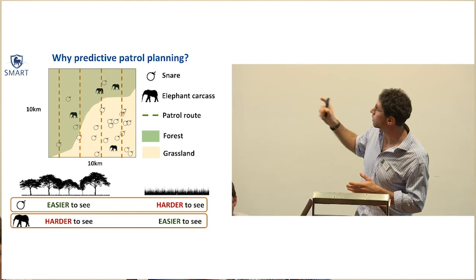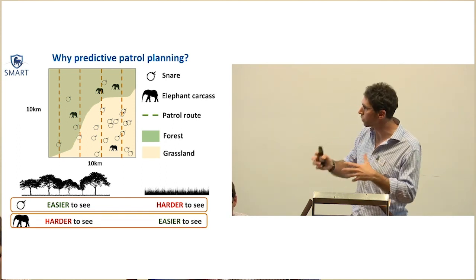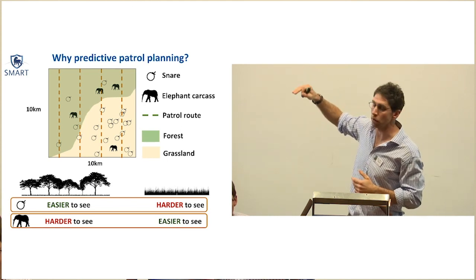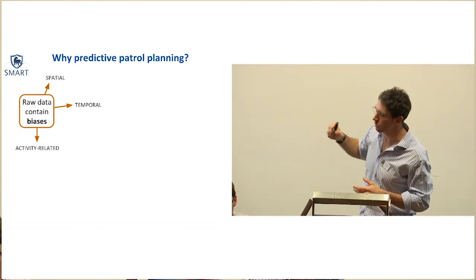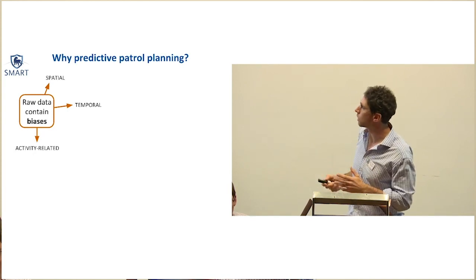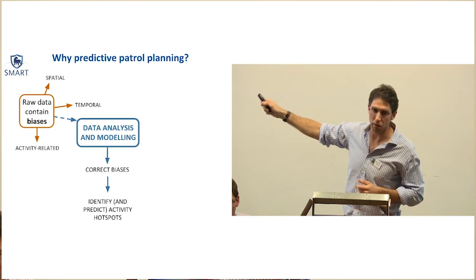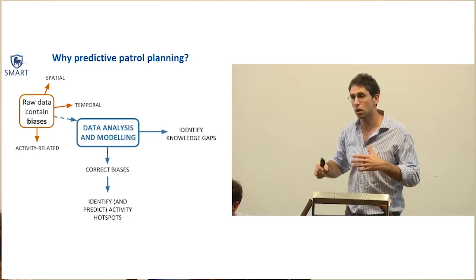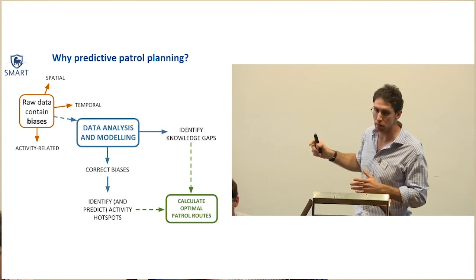Even with systematic patrol routes, biases are caused by landscape features. Snares are much easier to find in forested areas with a canopy and low undergrowth, and much harder to find in tall grasslands. So patrols might find more snares in forested areas and conclude that snaring is more common in the north of the park, which it isn't. Conversely, elephant carcasses are much easier to see in the open because they attract scavenging birds like vultures and marabou storks, whose circling alerts patrols to their presence. So we use data analysis and modeling to correct those biases and identify current activity hotspots as well as predict where they'll come up in the future.